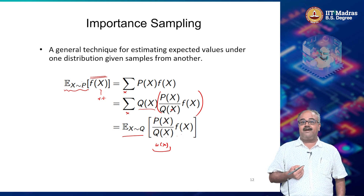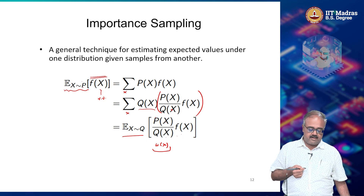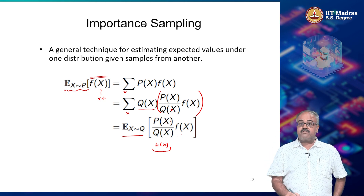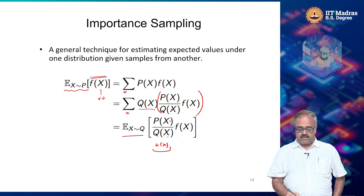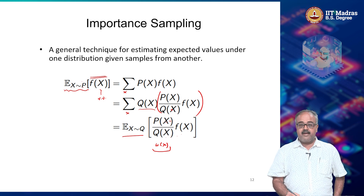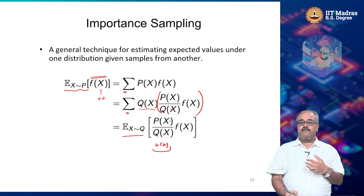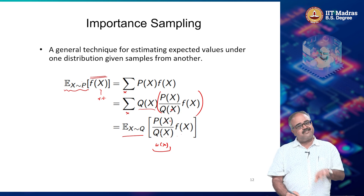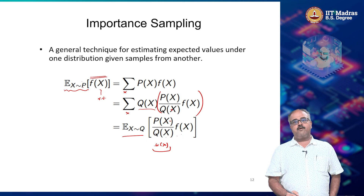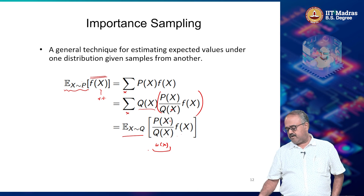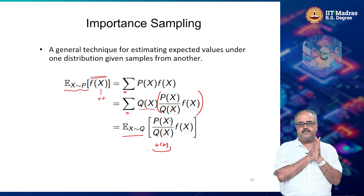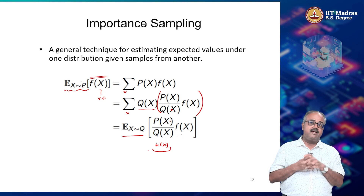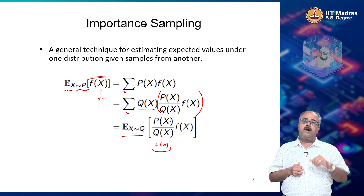This also explains the coverage condition from earlier. Whenever p(x) is non-zero, we want q(x) to be non-zero. Otherwise this ratio is undefined — p(x) would be some positive number and q(x) would be 0. Whenever p(x) is 0, we can ignore it from the summation, so it does not matter what q(x) is. That sample will not be used in the expectation computation. We can take this importance sampling idea and apply it to off-policy learning.